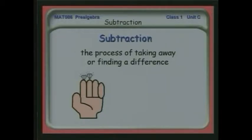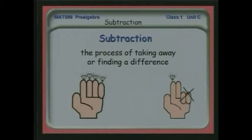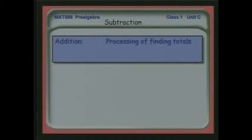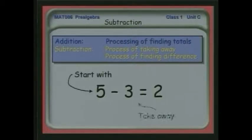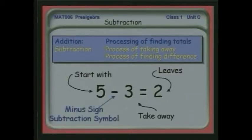So I have four things here, and if I take two away, I have two. The way we express this mathematically is four minus two is equal to two. The dash is a minus sign. So addition is the process of finding totals. Subtraction is the process of taking something away or finding a difference. We start with a five, take away the three, and that leaves us with two. The symbol for that is the minus sign, which is a dash.